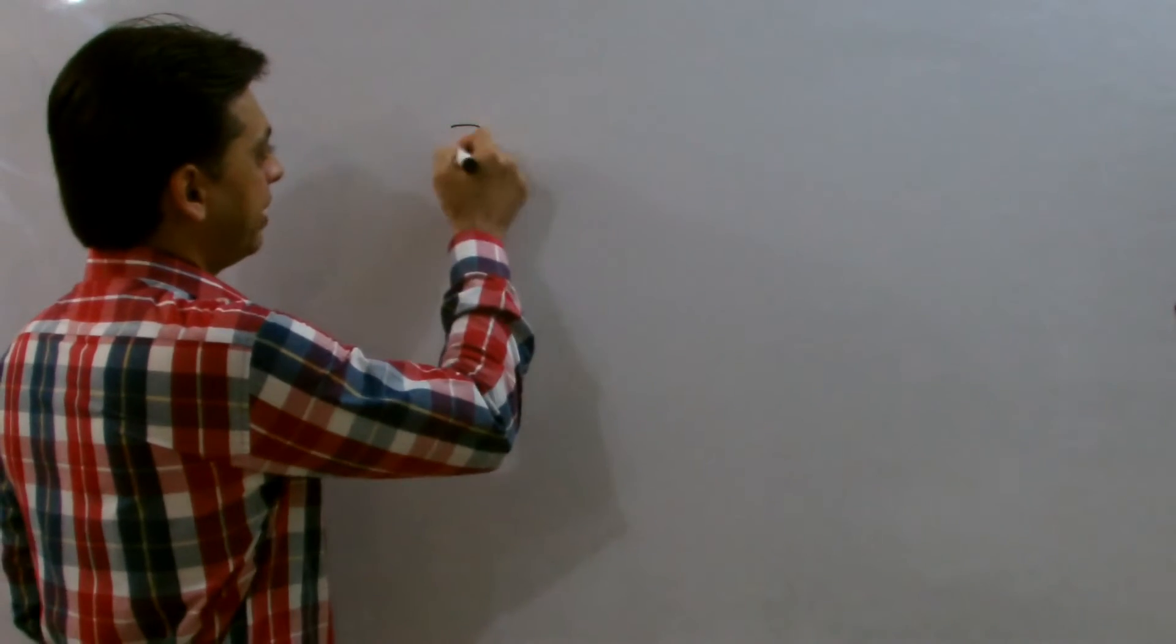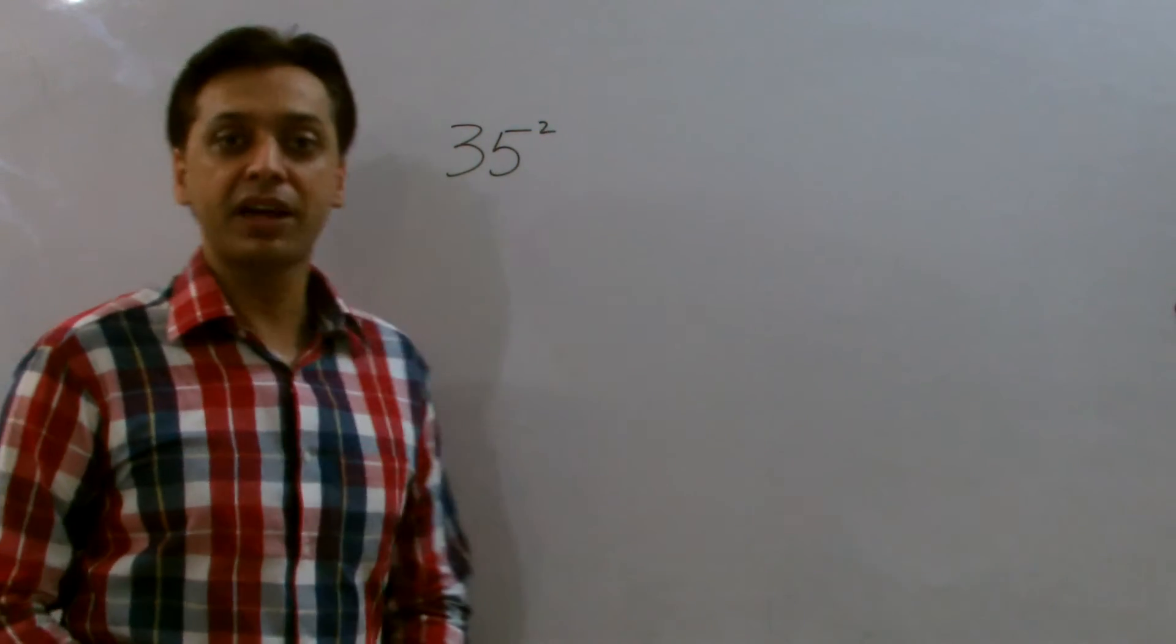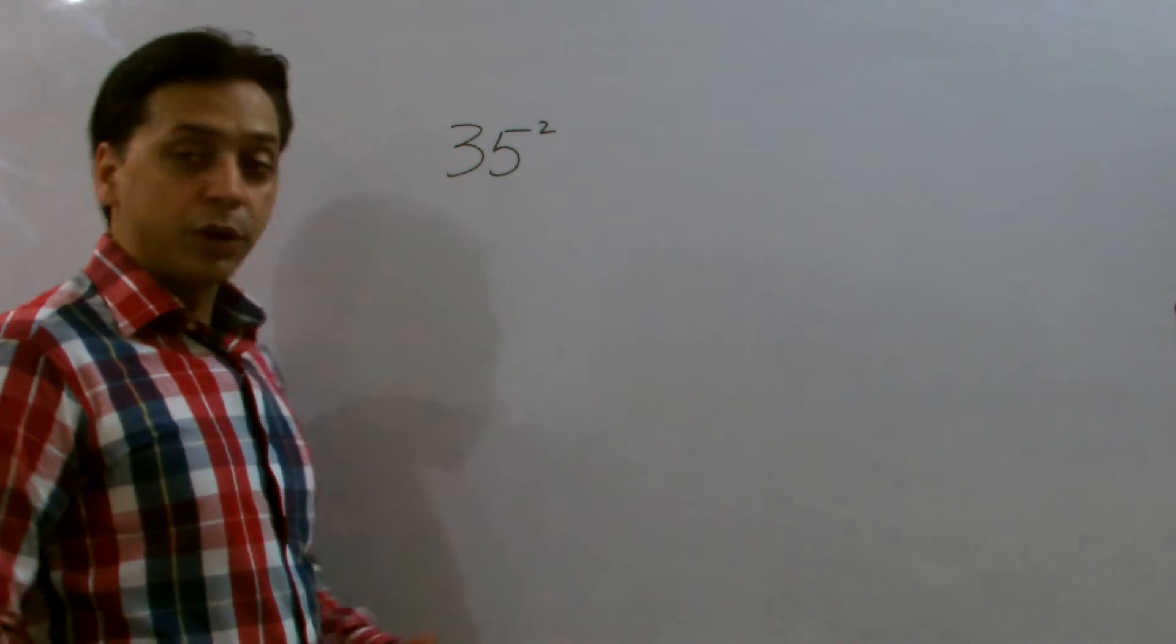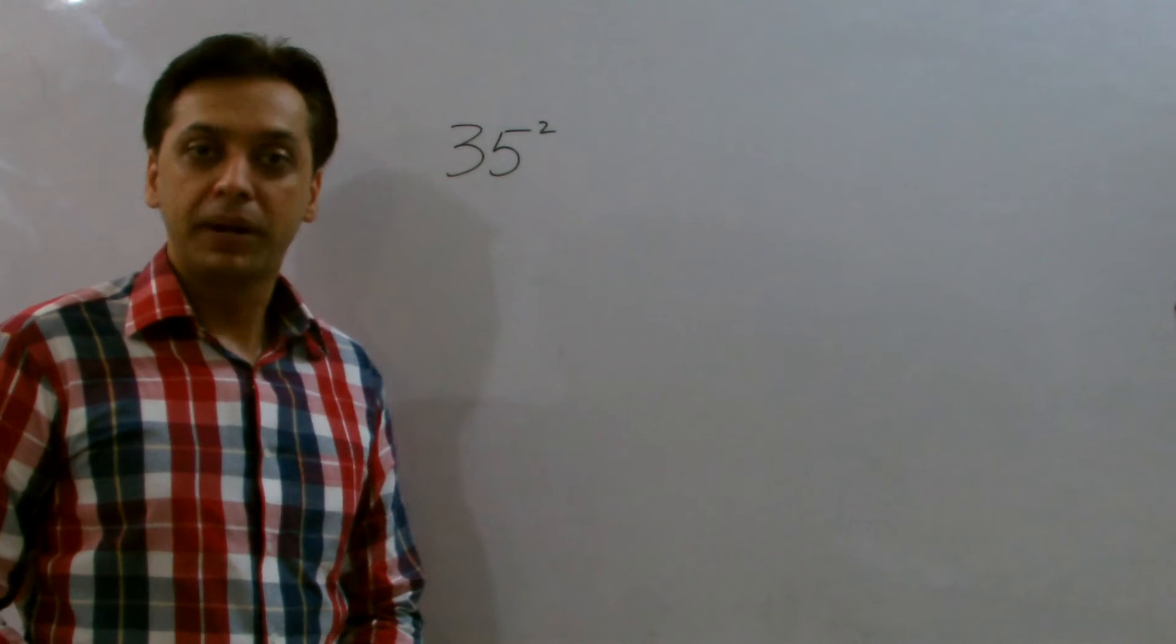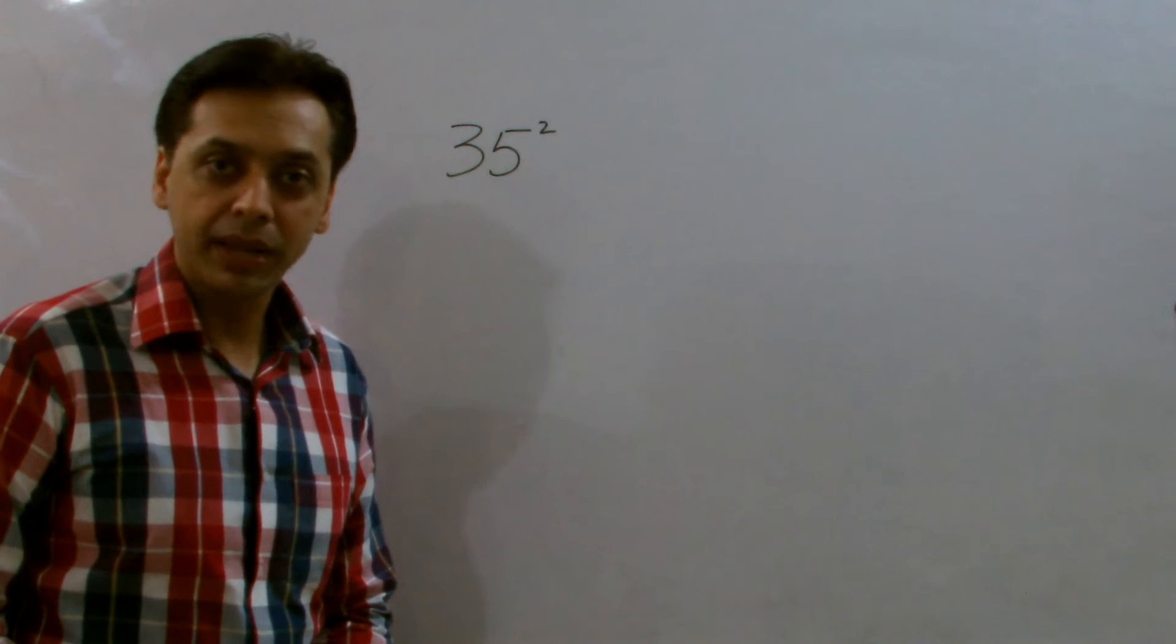For example, let's consider a number which is 35. Now, if you're interested to find the square of 35 without using a calculator, then you might go for the double multiplication. But according to my technique, you can find the answer in two steps in around 5 seconds.